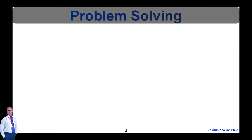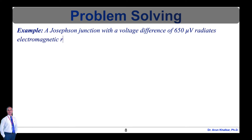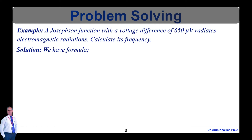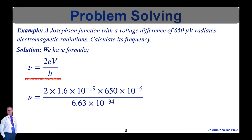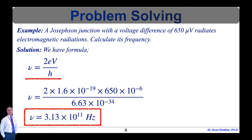Let's see a problem based on Josephson effect. A Josephson junction with a voltage difference of 650 micro volt radiates electromagnetic radiation. Calculate its frequency. Using the formula ν = 2eV/h, substituting values: ν = (2 × 1.6×10⁻¹⁹ × 650×10⁻⁶) / (6.63×10⁻³⁴), we get ν = 3.13×10¹¹ Hz.